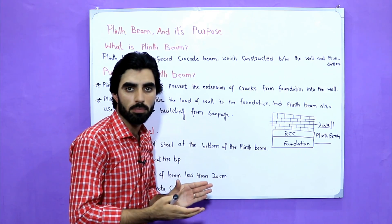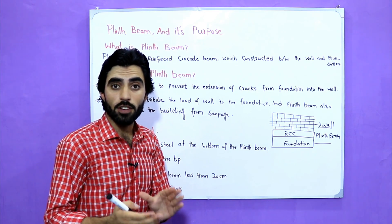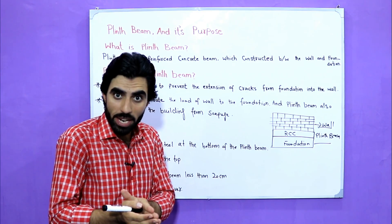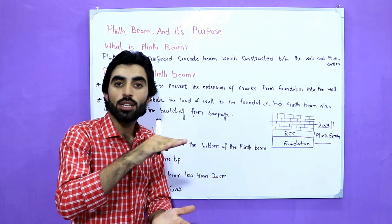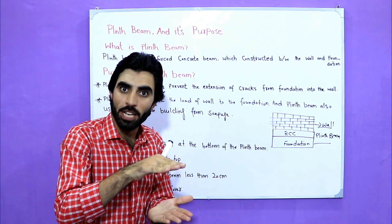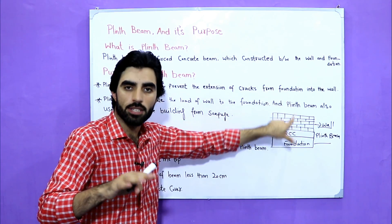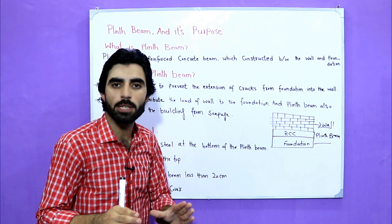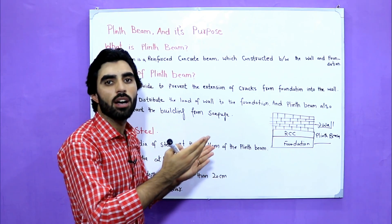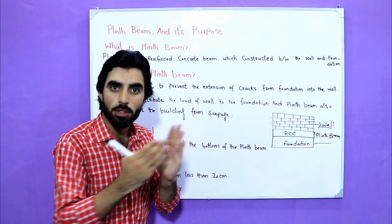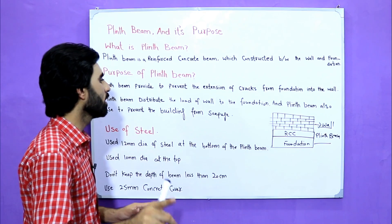And from where do the cracks come? From the foundation. If the foundation is weak, it makes cracks. So when we provide the plinth beam between foundation and wall, that plinth beam protects the wall from cracks. Therefore, we provide plinth beam to prevent the extension of cracks in the wall from the foundation, and the wall becomes safe from cracks.